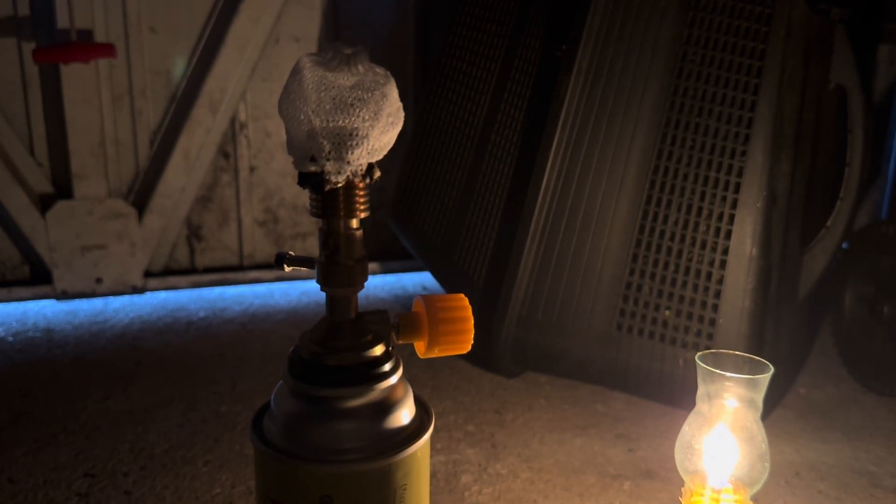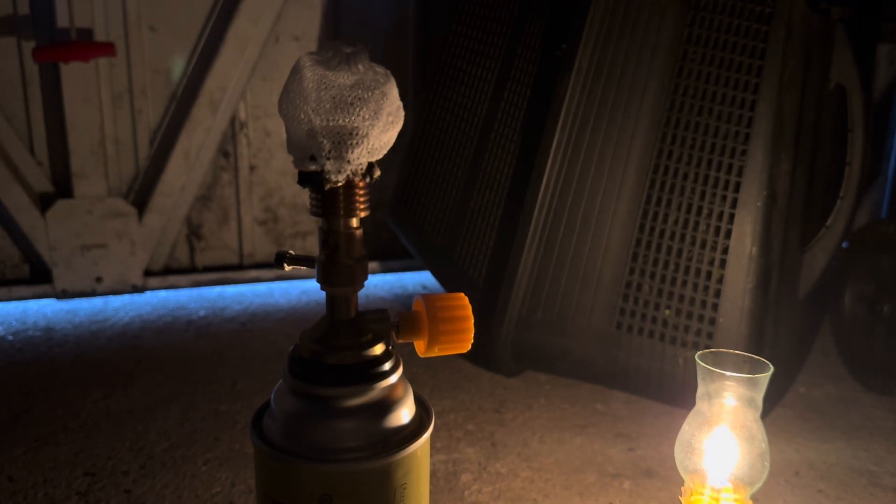The mantle itself is comprised of rare earth oxide, especially yttrium and cerium oxide. Cerium is used as a doping, whereas yttrium is the main one.